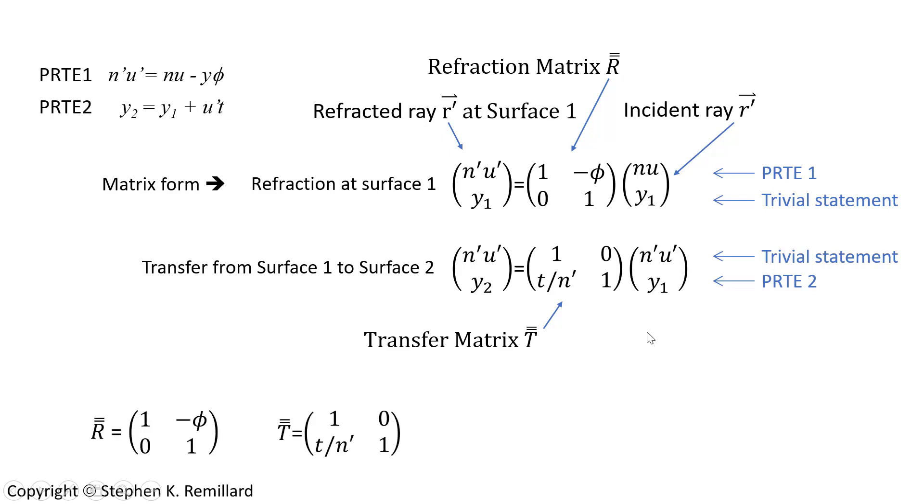So it summarizes the two general matrices that you can have as a ray propagates. You can have refractions and you can have transfers, and in the case of that thick lens where you have a front surface, a transfer from the front surface to the back surface, and then the refraction at the back surface, you can describe the overall movement of that ray with three matrices.